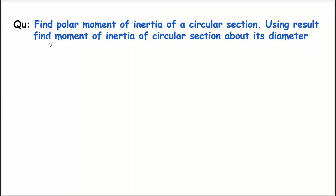Hi everyone. Let's discuss a very important question where we have to find the polar moment of inertia of a circular section, and also using the result we have to find the moment of inertia of a circular section about its diameter. There are two parts: the first part is to find the polar moment of inertia of the circular section, and the second part is to find the moment of inertia of the same circular section about its diameter.